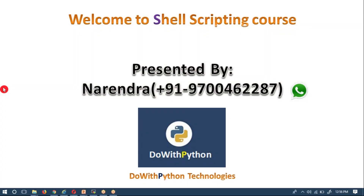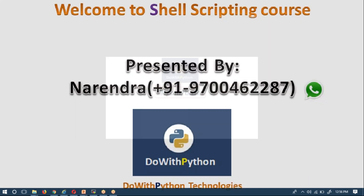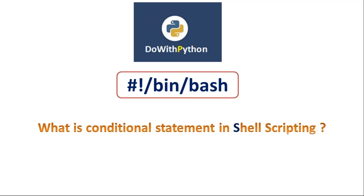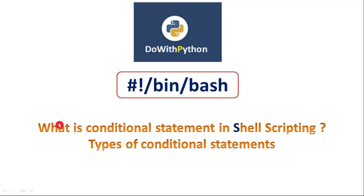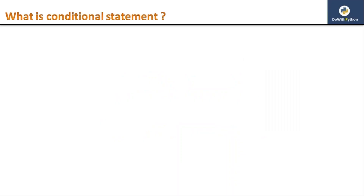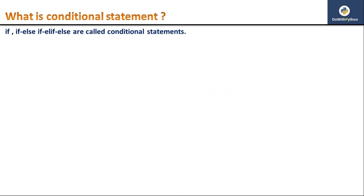Hi friends, welcome to the shell scripting course video series presented by Narendra from Do With Python Technologies. In this video we are going to see what is a conditional statement in shell scripting and the types of conditional statements. Basically in any language we have conditional statements: if, if-else, if-else-if-else, and even nested ifs — they are all called conditional statements.